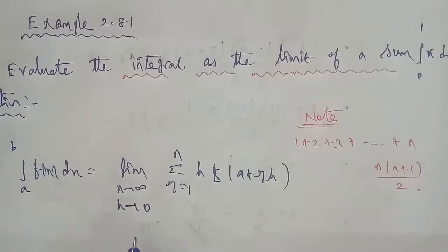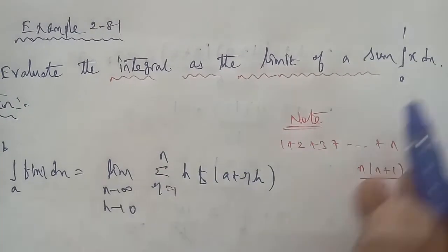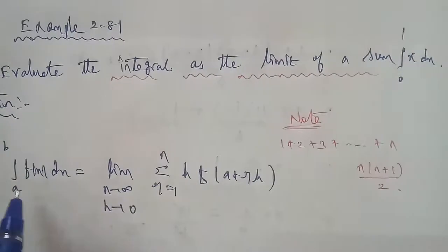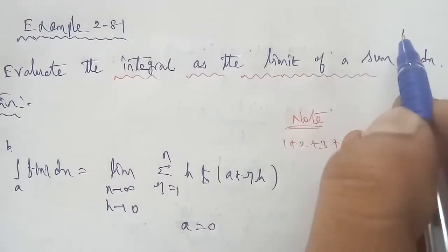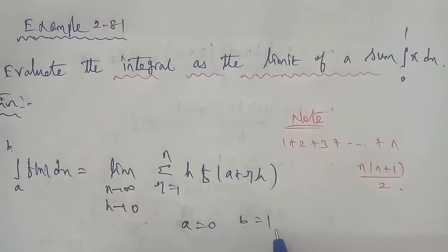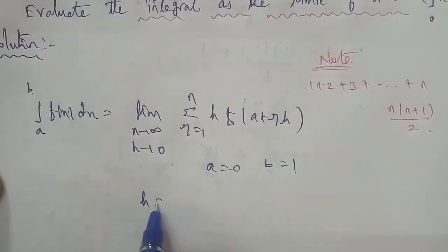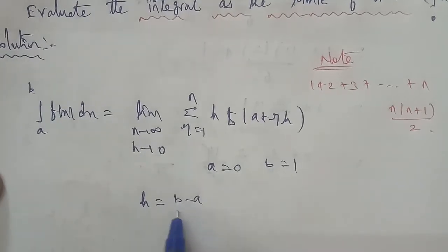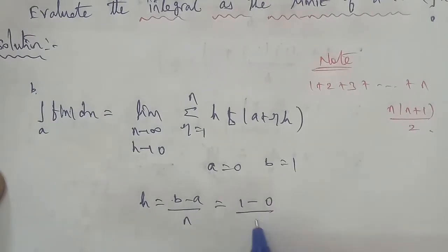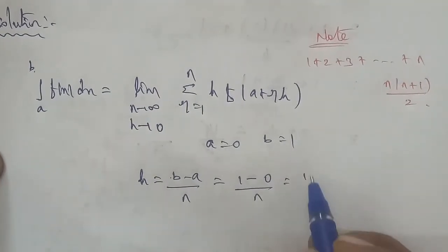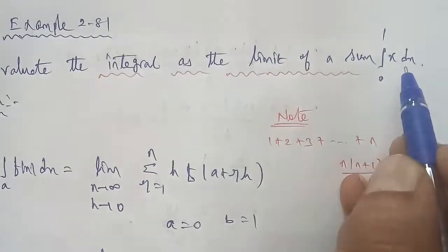If you know what to do in the formula, we have a value. Here, a is equal to 0, b is equal to 1. Next, h is equal to b minus a by n.